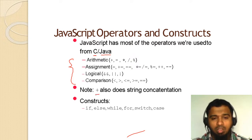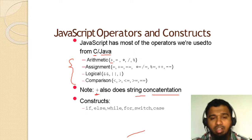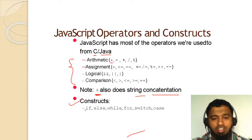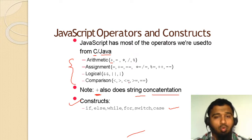The plus operator also does string concatenation. So the plus symbol is used for adding as well as for concatenating — we will see that in problems. Constructors: if, else, while, for, switch case — you have all completed these in C and Java, so we can also use them in JavaScript.